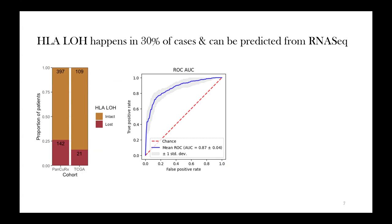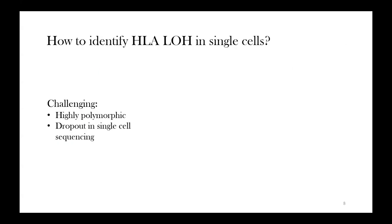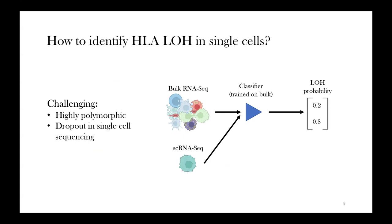I've also benchmarked this in TCGA, which were samples never seen by the classifier — a completely external cohort — and it achieves an AUC of 0.77, which works shockingly well, especially considering the domain shift and that sample quality in TCGA is not that high. Now I want to extend this to single cells, which is even more complicated because not only are the genes just as polymorphic, but we also have dropout in single-cell sequencing. My approach is to use bulk sequencing labels to train the classifier and then push single-cell data through the same pipeline, obtaining a predicted probability of HLA-LOH for each individual cell.